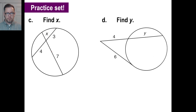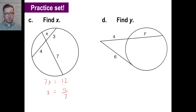For problem C, these are being multiplied inside. We have 7 times x equals 4 times 3, which is 12. So x is going to be 12 over 7, or a little less than 2. That's a reasonable answer — since this is 7, x is less than a third of that.